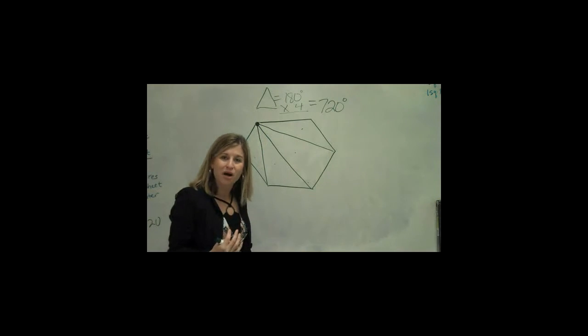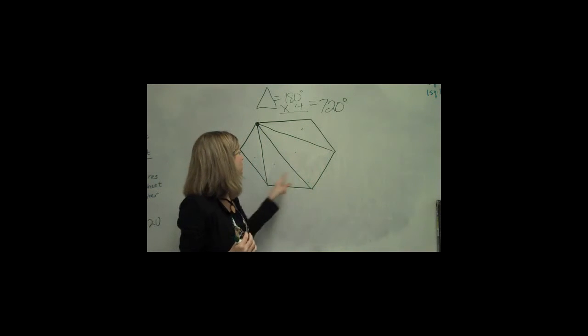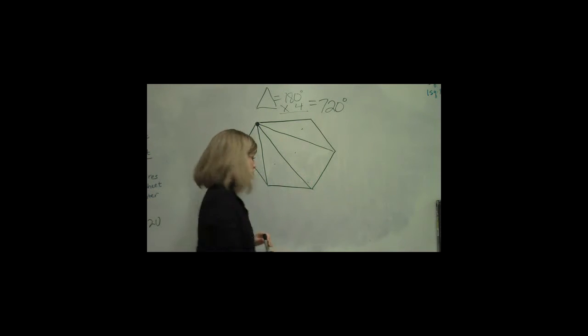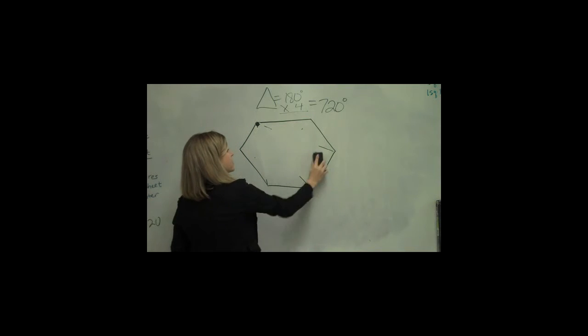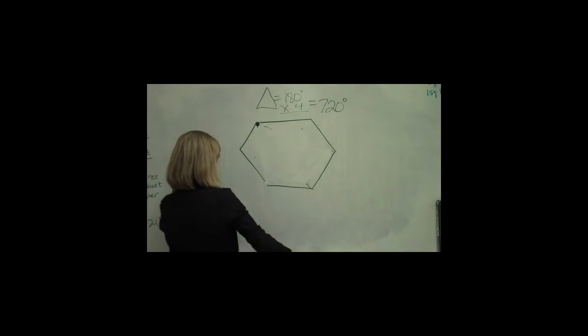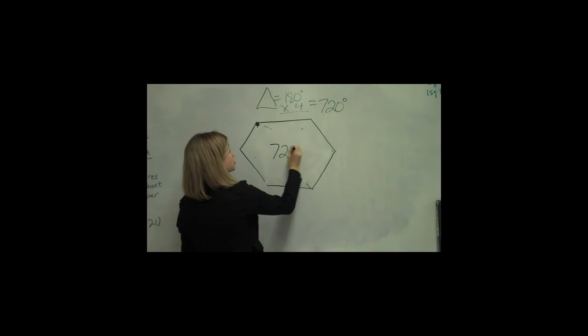So the sum of all the interior angles of this polygon is 720. So if I write that right here, I won't forget. So the whole thing inside is 720 degrees.